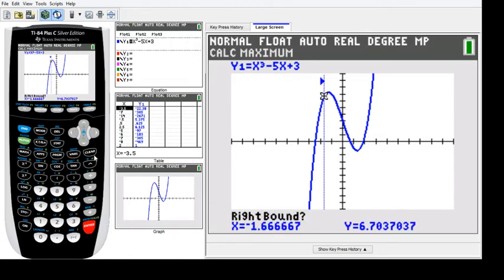Press Enter. Now it's asking for the right bound. Move the cursor back to the right, past the maximum. Press Enter again, then Enter one more time, and here's your maximum.